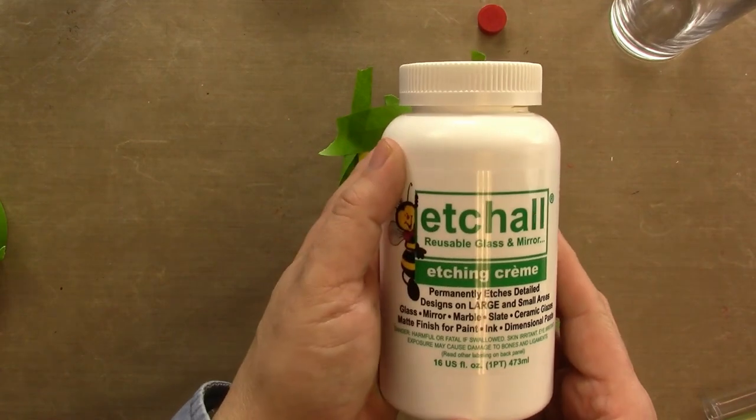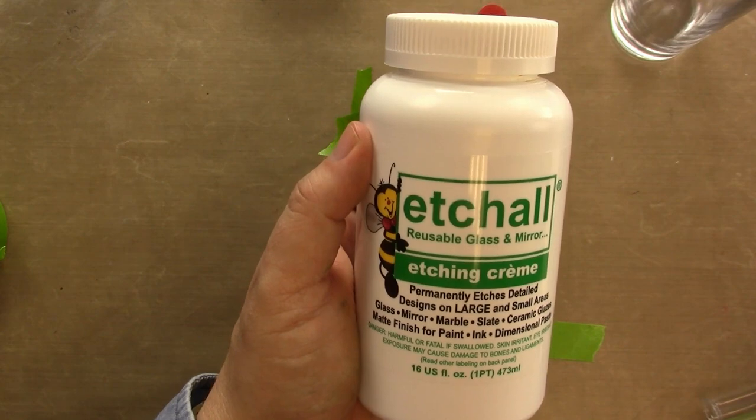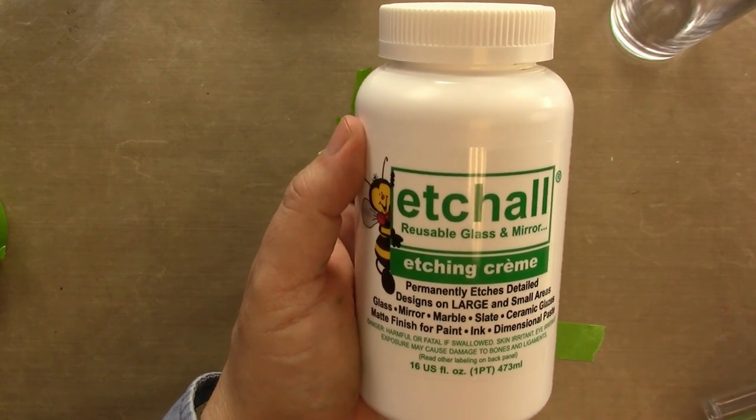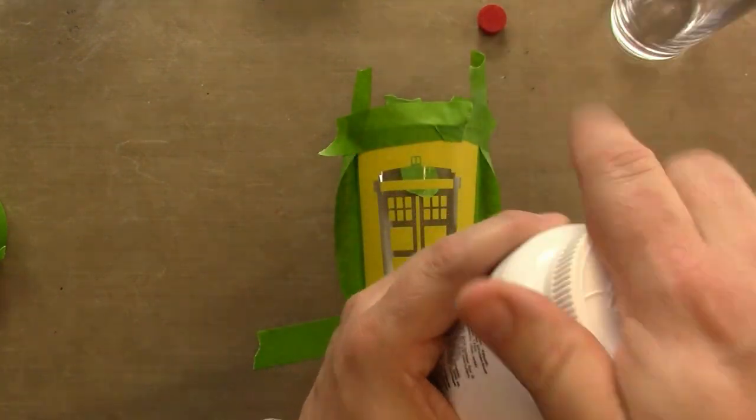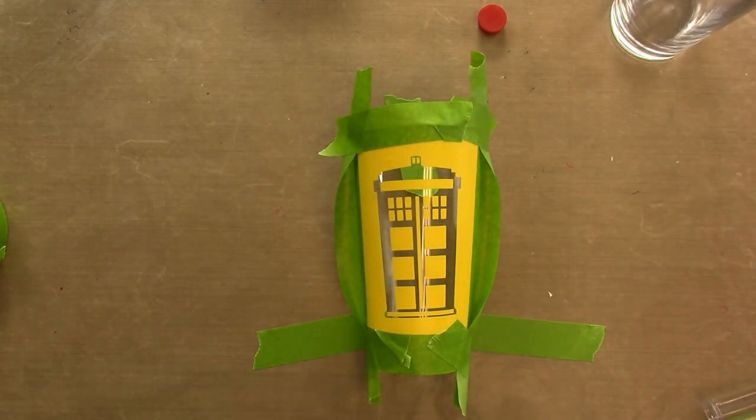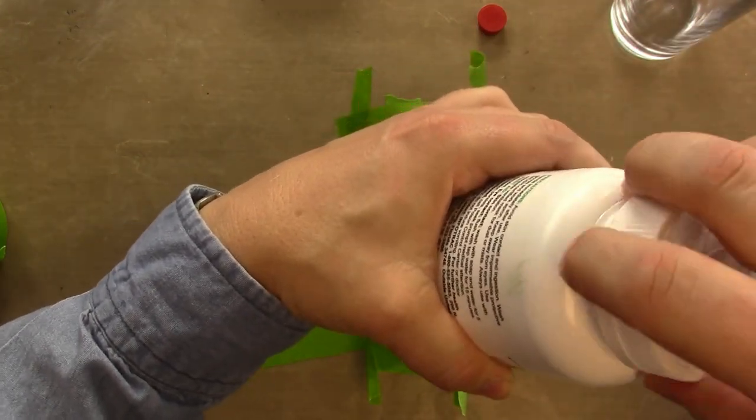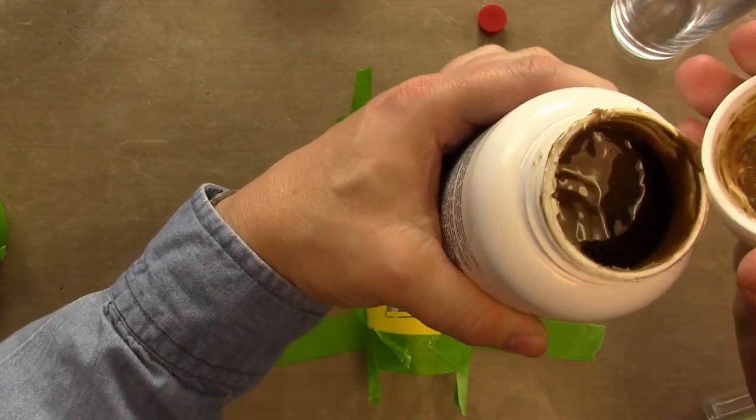So I have my Etchall etching cream here. Remember, this permanently etches glass, mirror, marble, slate. It can take off ceramic glazes. This bottle I've had for a while, and we'll see once I get it open here, that my cream is a really dark chocolate color.